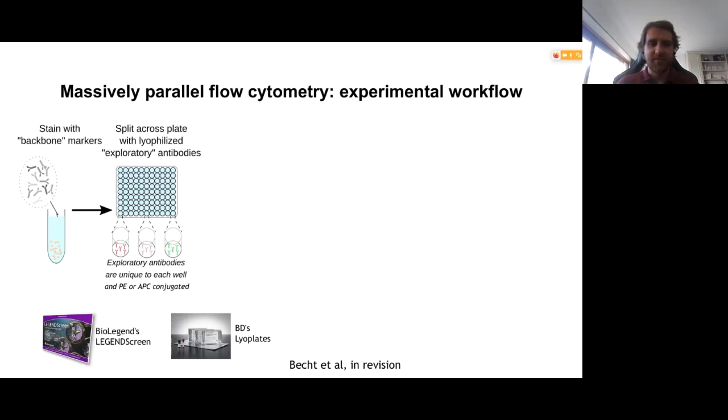So first, workflow. In terms of experiments, it starts very similarly to flow cytometry. You have your cell suspension and you label this cell suspension with a panel of antibodies. In this context, we call them the backbone antibodies. I'm going to use this term a lot. We call it backbone because it's really going to support the entirety of the experiment. The backbone panel is pretty much like your conventional flow cytometry panel.